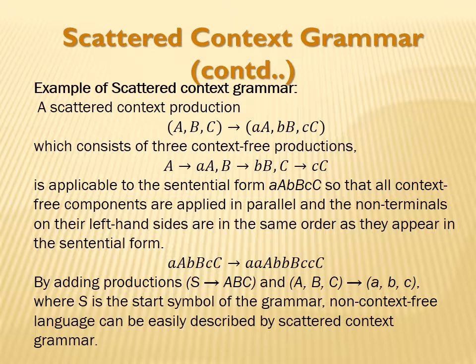Like a scattered context production: (A, B, C) → (A, A, B, B, B, C, C) is having actually three context-free productions — A→A, B→B, C→C — and these productions are to be applied in parallel.